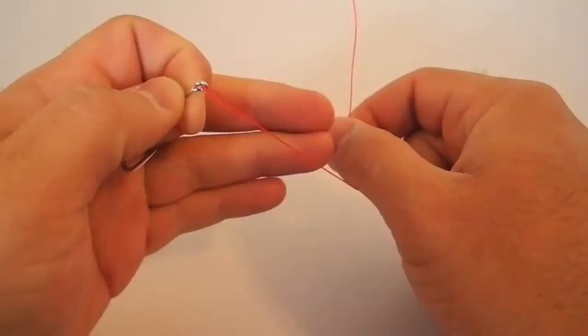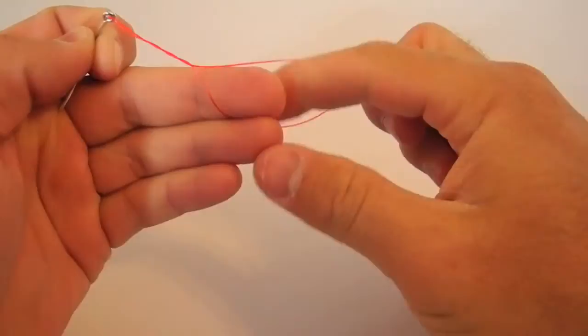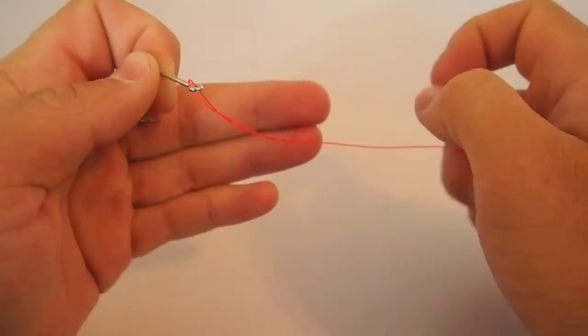Now what I'm going to do is use my middle finger and ring finger to actually grasp the tag end of the tippet. I'm going to twist it around the standing line, or the long line that goes to the reel, just like that. I'm going to twist about five times.